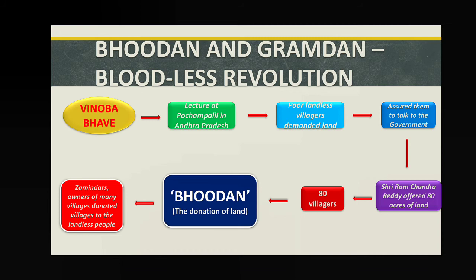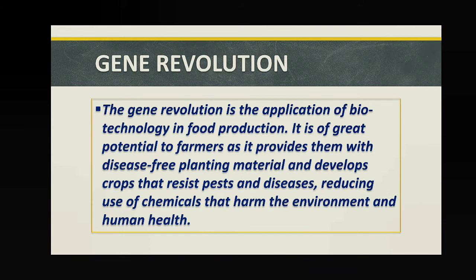It is called a revolution and a drastic change because before independence, agricultural lands were owned by zamindars. When zamindars started donating land to landless farmers, it was a surprising, drastic change. This drastic change happened without losing a single drop of blood, which is why it is called a bloodless revolution.